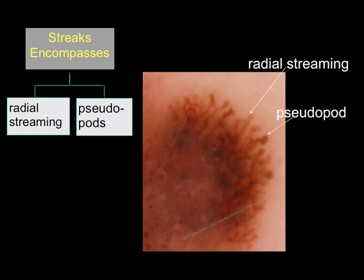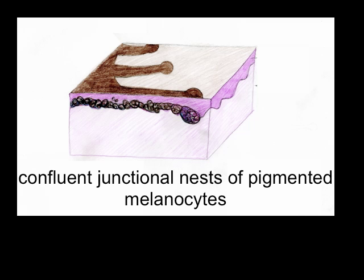This melanoma reveals both radial streaming and pseudopods, as highlighted by the arrows. Both of these structures are considered under the general heading of streaks. On histopathology, streaks correlate with confluent junctional nests of pigmented melanocytes.